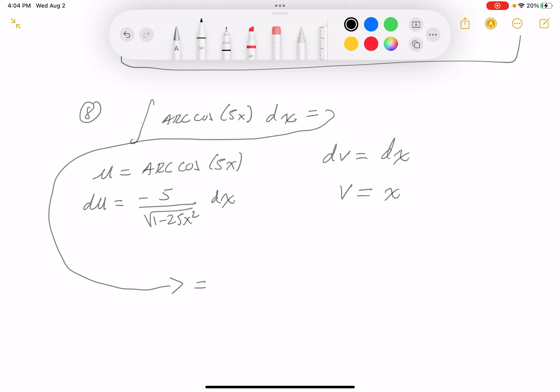Equals uv, well, that's minus 5. I'm sorry, not minus 5. I said uv. Sorry about that. It's going to be x times the arc cosine of 5x minus v, which is x, du, which is going to be, oh, it's negative, so I'll put this over here.